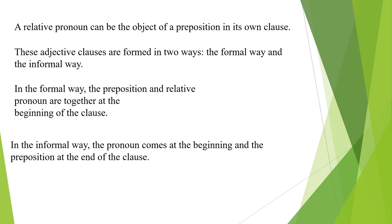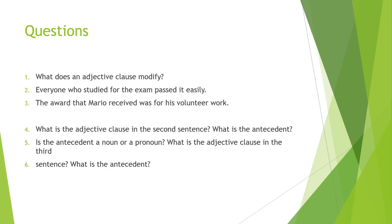Summary of important points: An adjective clause is a dependent clause that functions as an adjective, giving more information about a noun or pronoun — the antecedent. It begins with a relative pronoun or relative adverb. Place the adjective clause after its antecedent and as close to it as possible. The verb should agree in number with the antecedent. Adjective clauses are either restrictive (necessary, no commas) or non-restrictive (unnecessary, use commas).